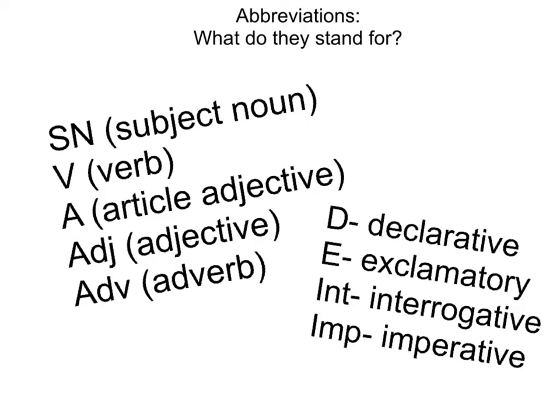Then we've got adjectives. We use the abbreviation ADJ. When we're looking for adjectives within our sentence, we need to ask three different questions: What kind? Which one? How many? If there are any words that answer those questions, then you have found the adjectives in the sentence.